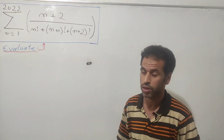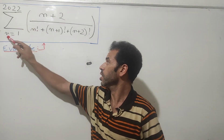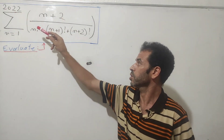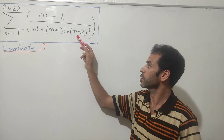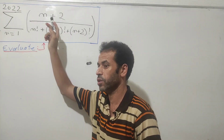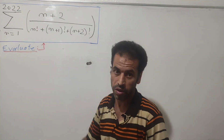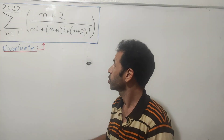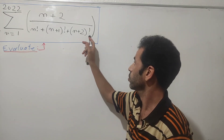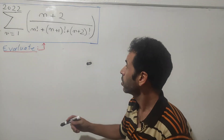In today's video we are going to evaluate this sum: as n goes from 1 to 2022 of (n+2) divided by n factorial plus (n+1) factorial plus (n+2) factorial. The first thing coming to mind is how to simplify this fraction, since we have a relationship between these three factorial terms in the denominator.